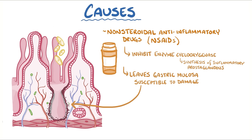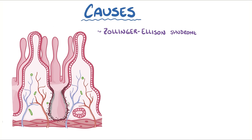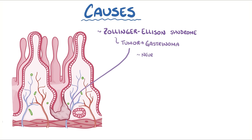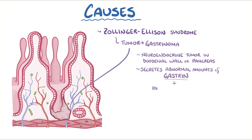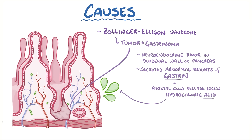A rare cause of peptic ulcer disease is Zollinger-Ellison syndrome, which is due to a tumor called a gastrinoma. A gastrinoma is a neuroendocrine tumor typically located in the duodenal wall or pancreas, and secretes abnormal amounts of gastrin. Excess gastrin stimulates parietal cells to release excess hydrochloric acid, which overwhelms normal defense mechanisms and allows ulcers to develop in the first portion of the duodenum, or even in the distal duodenum or jejunum.